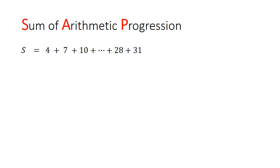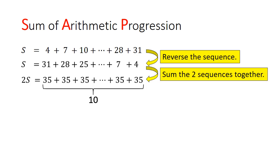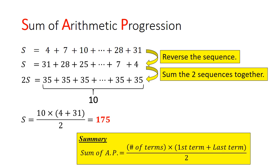Another approach is to let S be the sum of the AP. We reverse the sequence and then we add the two sequences together. This will give us 10 sets of 35. The sum will therefore be equal to 175. In summary, the sum of an AP is equal to the number of terms multiplied by the first term added to the last term divided by 2.